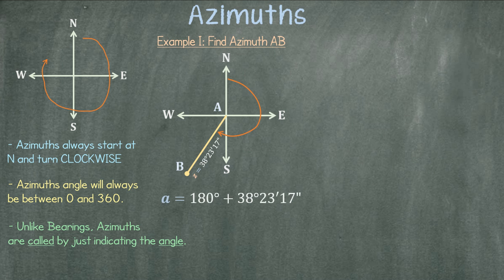The total angle for the azimuth is 218 degrees 23 minutes and 17 seconds.